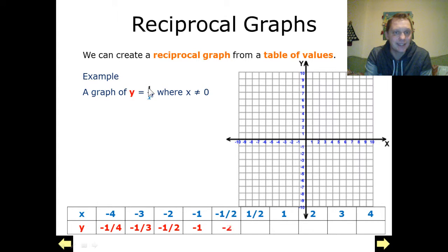So replacing x into my equation, substituting this in, when x equals minus 4, I get y equals 1 over minus 4, so a negative quarter, and so on and so forth going up. And then I use my x and y coordinates to actually plot on my graph.